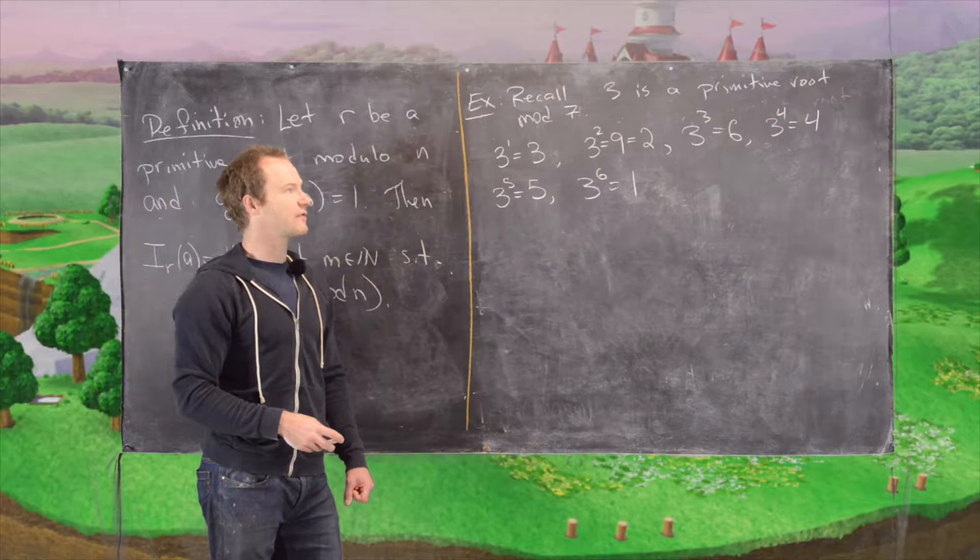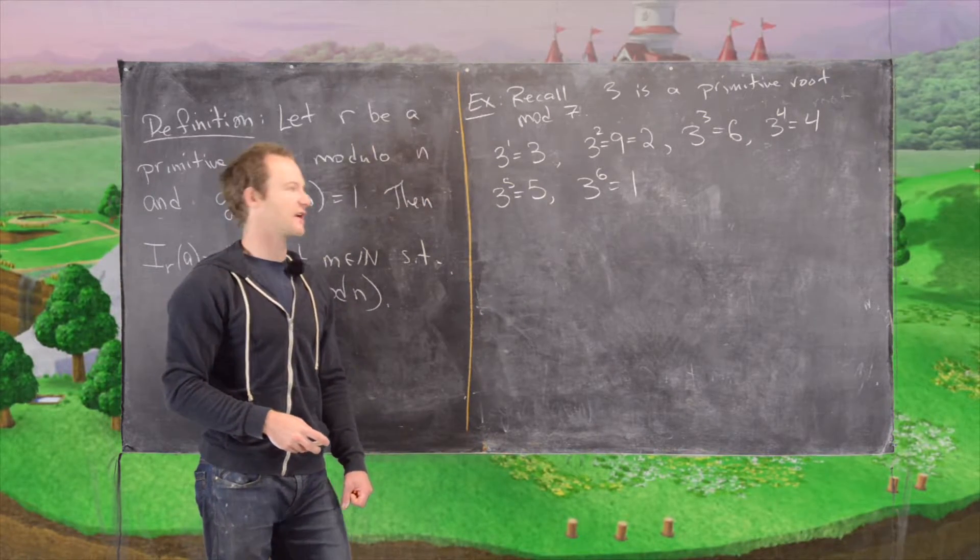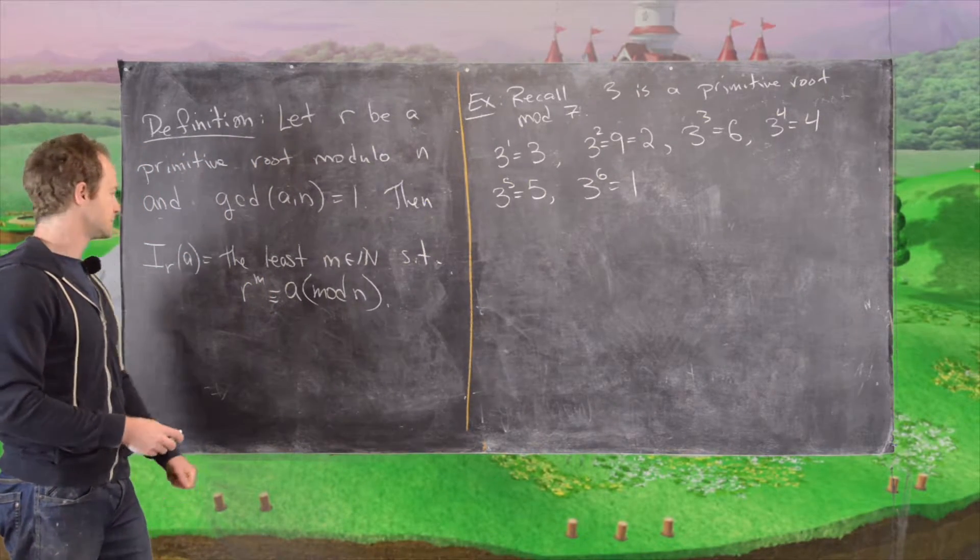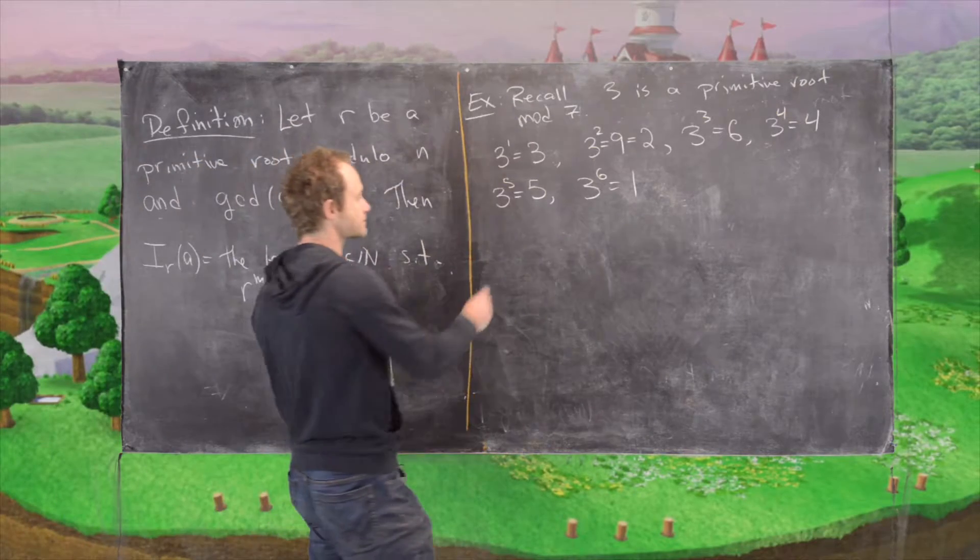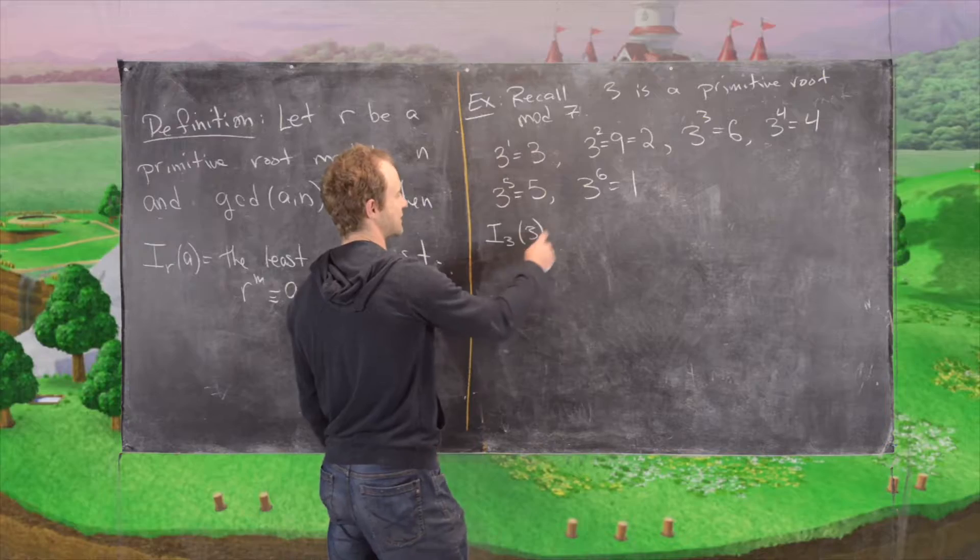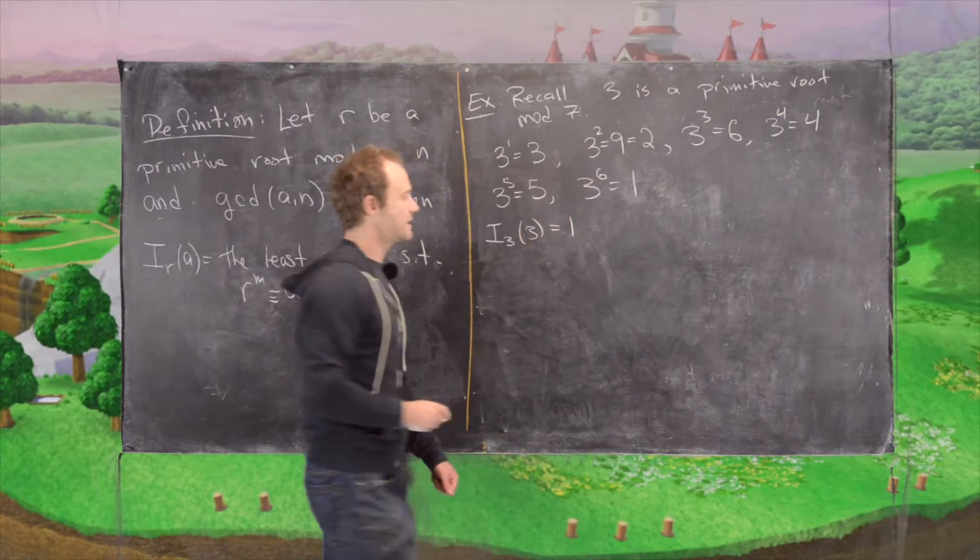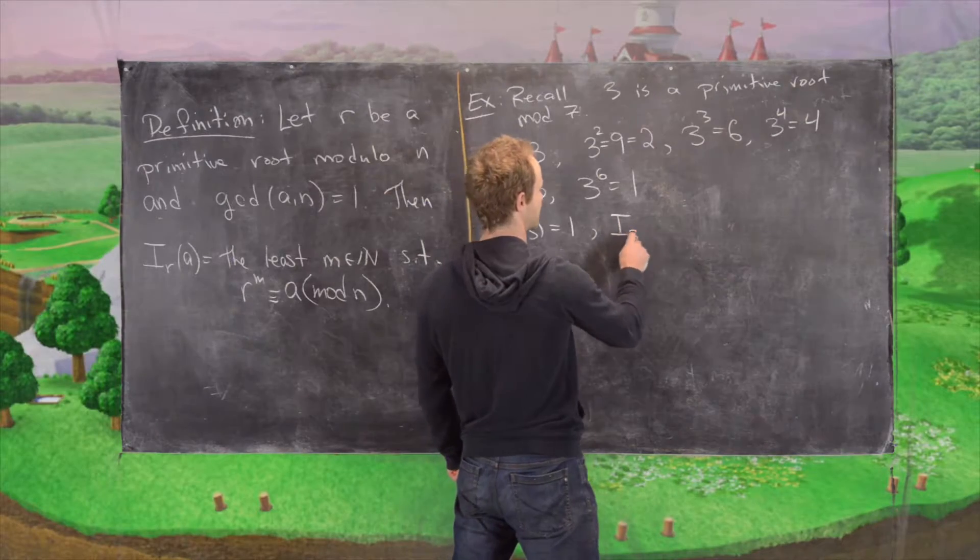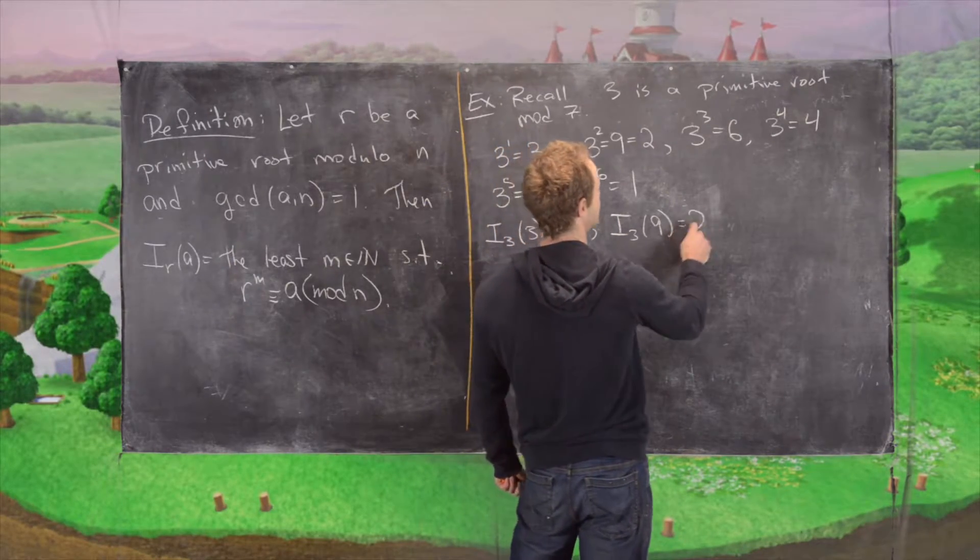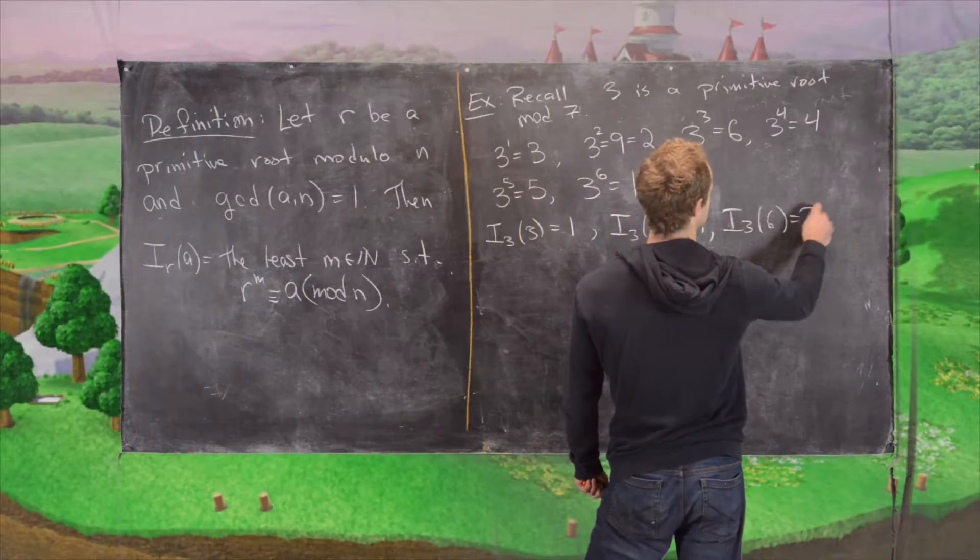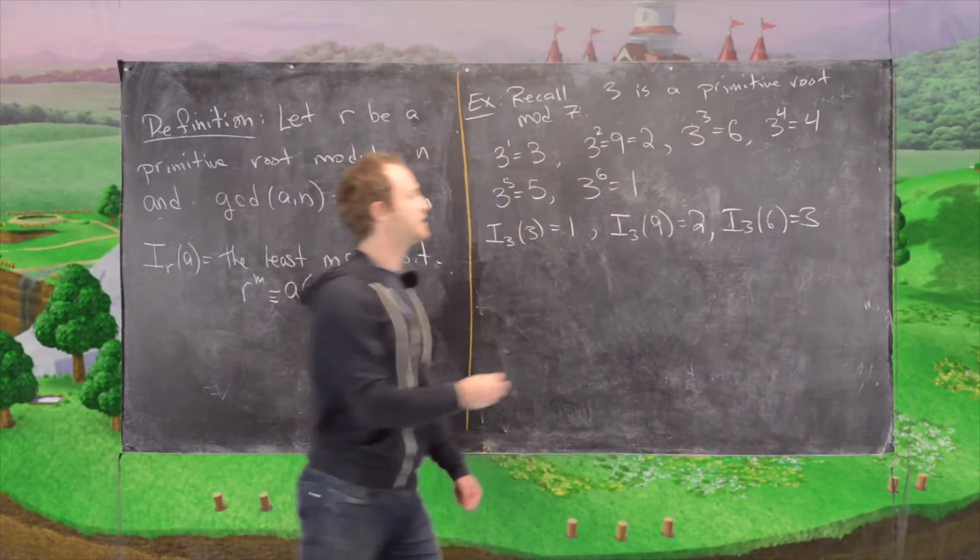Okay, so now we can rewrite all of these equations in their index equation or in other words with respect to their discrete logarithm. So let's see. So this means the index with respect to 3 of 3 is 1. The index with respect to 3 of 9 is 2. The index with respect to 3 of 6 is 3 because 3 cubed is 6.